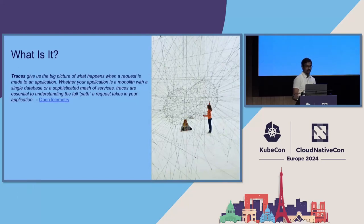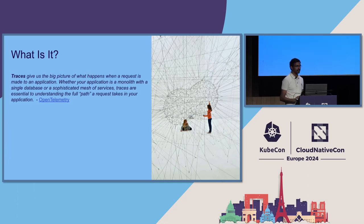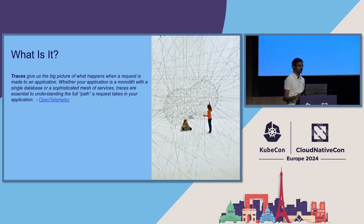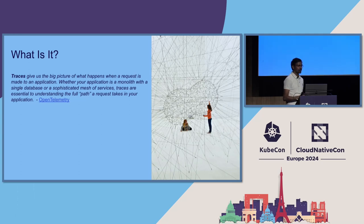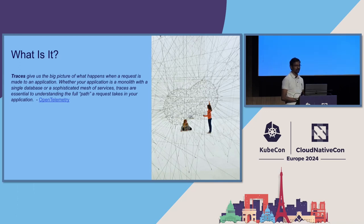What is tracing? OpenTelemetry's website defines tracing as: traces give us the big picture of what happens when a request is made to an application. Whether your application is a monolith with a single database or a sophisticated mesh of services, traces are essential to understanding the full path a request takes in your application. Why is it important inside of eBay? We have call chains that can have tens of databases and several microservices, so knowing exactly what the customer saw when a request was being served — tracing is very critical for that.